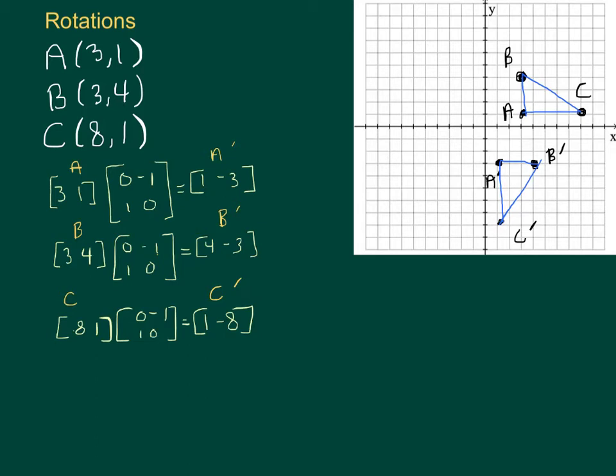And how does it relate to the original? Well, I'm not sure if you can tell, but it's rotated 90 degrees about the origin. So what do you mean by 90 degrees? Well, I mean, imagine you're at the origin and you have a rope attached to A. And if you rotate it clockwise 90 degrees, you'll get A prime.